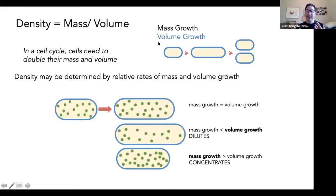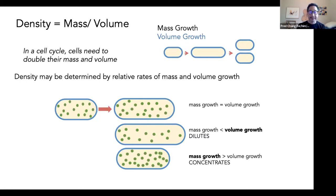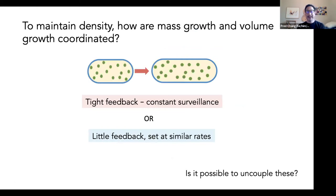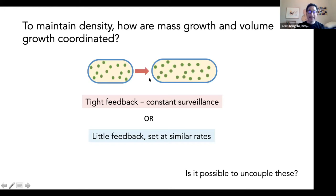Normally mass growth and volume growth are somehow coupled with each other. To maintain density, mass growth and volume growth have to proceed at about the same speed. So what happens if they're not? If mass growth is slower than volume growth, then the cytoplasm will dilute. If mass growth is proceeding faster than the rate of volume growth, then the cytoplasm will concentrate. To maintain density, we're thinking about how these two processes are actually coordinated with each other — there might be very tight feedback, or there might be very little feedback and these two processes are set at similar rates.